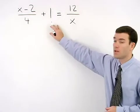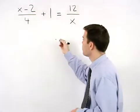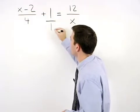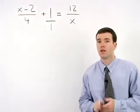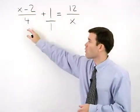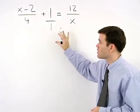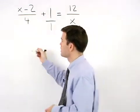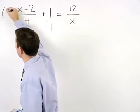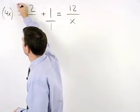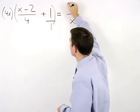Think of the 1 in this problem as 1 over 1. The common denominator for 4, 1, and x is 4x. So multiply both sides of the equation by 4x to get rid of the fractions.